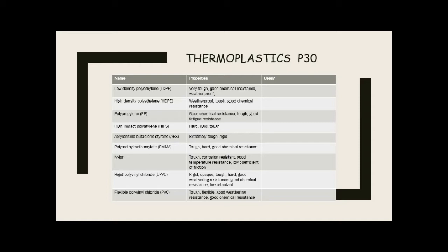For each polymer group I'll cover the most common ones that come up in exam questions along with their properties. I'd suggest pausing the video to try to come up with possible uses, because in exam questions they'll typically give you a picture of a plastic product and ask you to suggest an appropriate material and explain why. The best approach is to look at the use and figure out what properties are needed — for example, a plastic garden chair needs good weather resistance, chemical resistance, durability, and UV resistance — then match those properties to a suitable plastic.